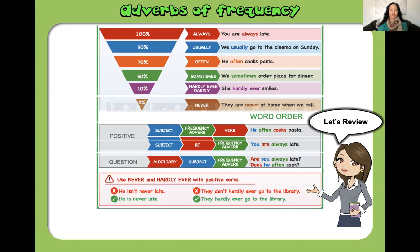Use 'never' and 'hardly ever' with positive verbs. For example, you should never say 'He isn't never late' — you would say 'He is never late.' Saying 'isn't never' is like saying 'not' twice. Similarly, you would not say 'They don't hardly ever go to the library' — that's saying 'no' twice. You would say 'They hardly ever go to the library.'